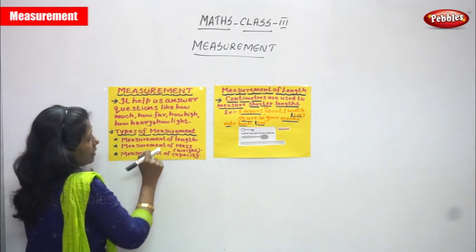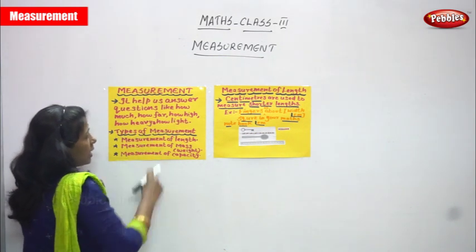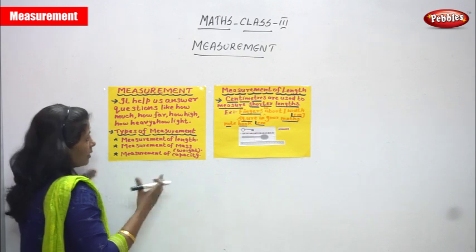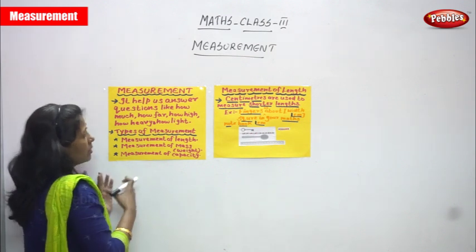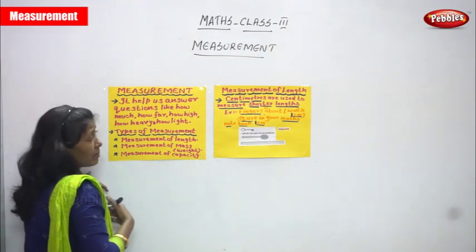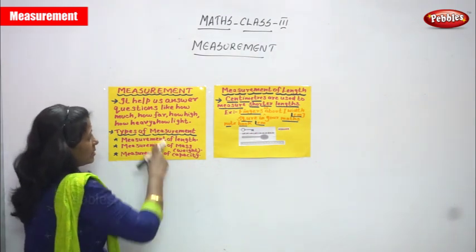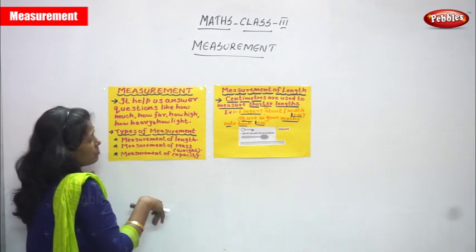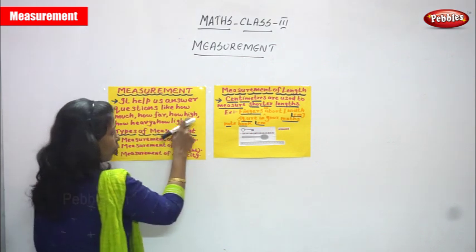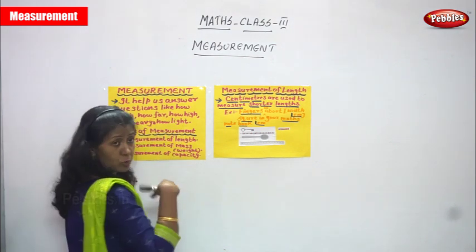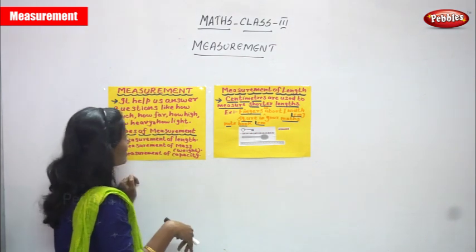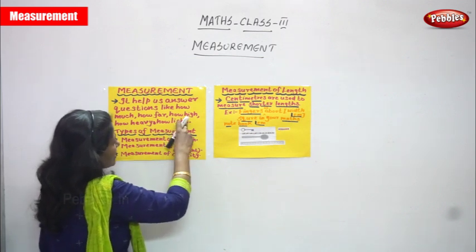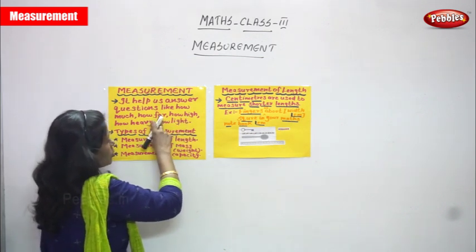How far and how high — 'how far' means length; it gives the meaning of length. So it comes under measurement of length. 'How high' is also measurement of length. We generally call its units meter and kilometer.